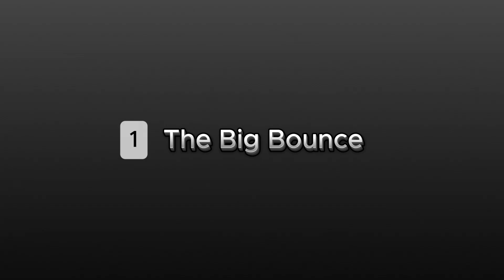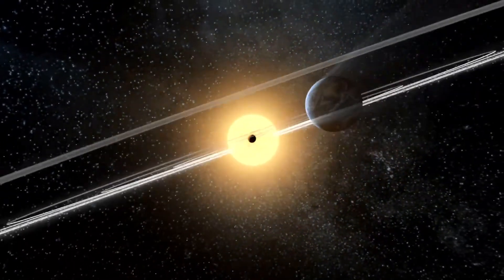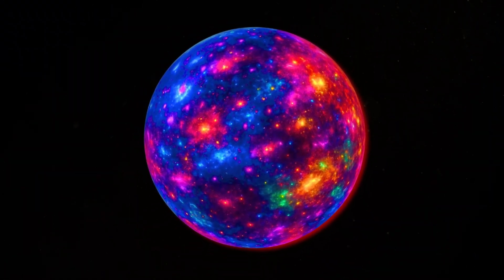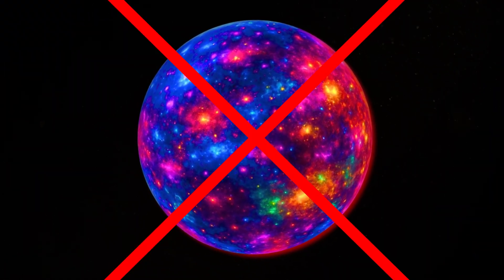Theory one: the Big Bounce cyclic universe. The Big Bounce is one of the most fascinating alternatives to the idea that the Big Bang was the absolute beginning. Instead of a single creation event, it suggests that the universe goes through endless cycles of birth, growth, collapse, and rebirth.